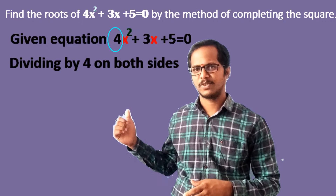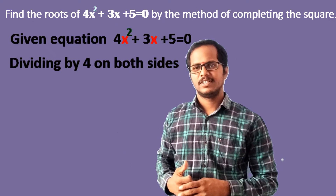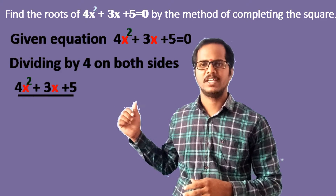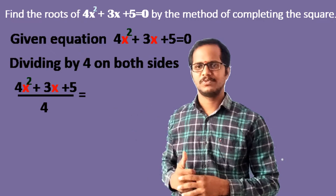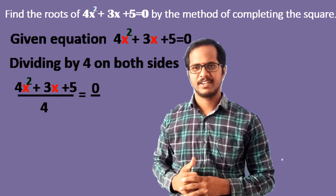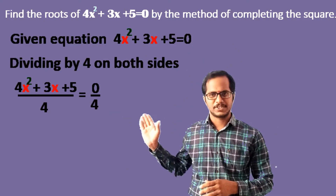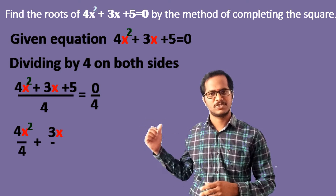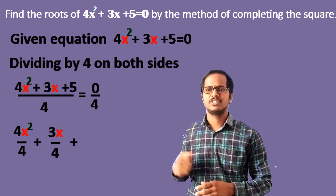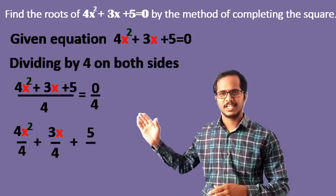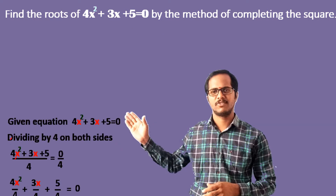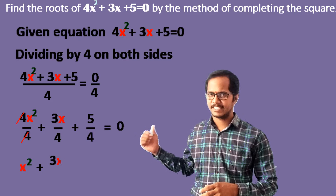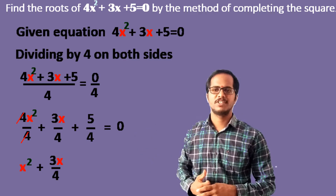Let us divide by four on both sides of this equation. We can write (4x² + 3x + 5) / 4 = 0/4. This gives us 4x²/4 + 3x/4 + 5/4 = 0. Cancelling 4 and 4 in the first term, we get x² + (3/4)x + 5/4 = 0.